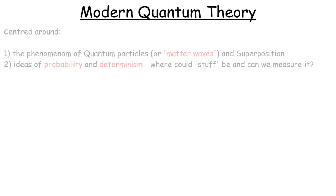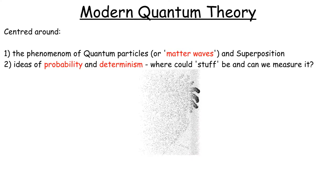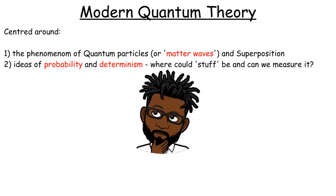The meat and potatoes of modern quantum theory is the fact that we have quantum particles or matter waves, which do wave-like stuff, like superimpose, and these quantum particles are heavily dependent on the ideas of probability and determinism.